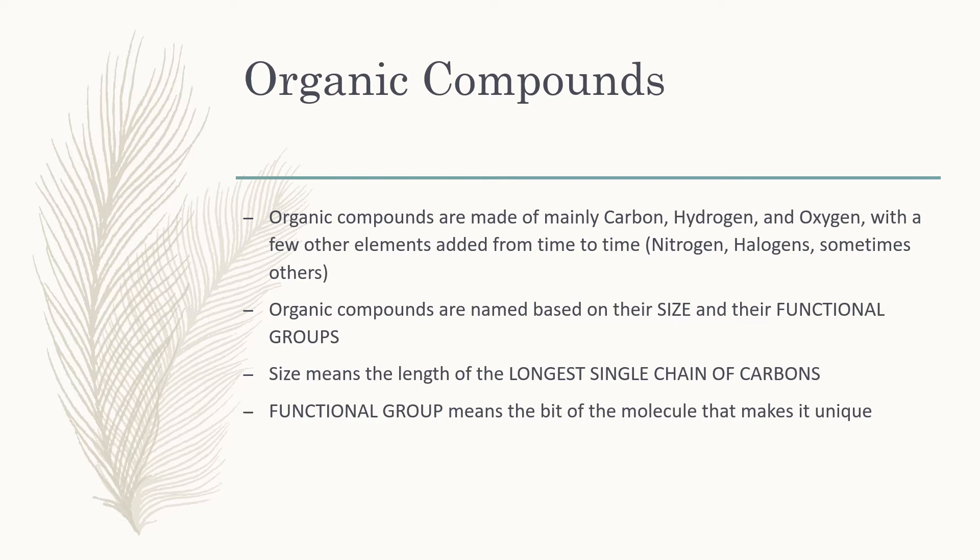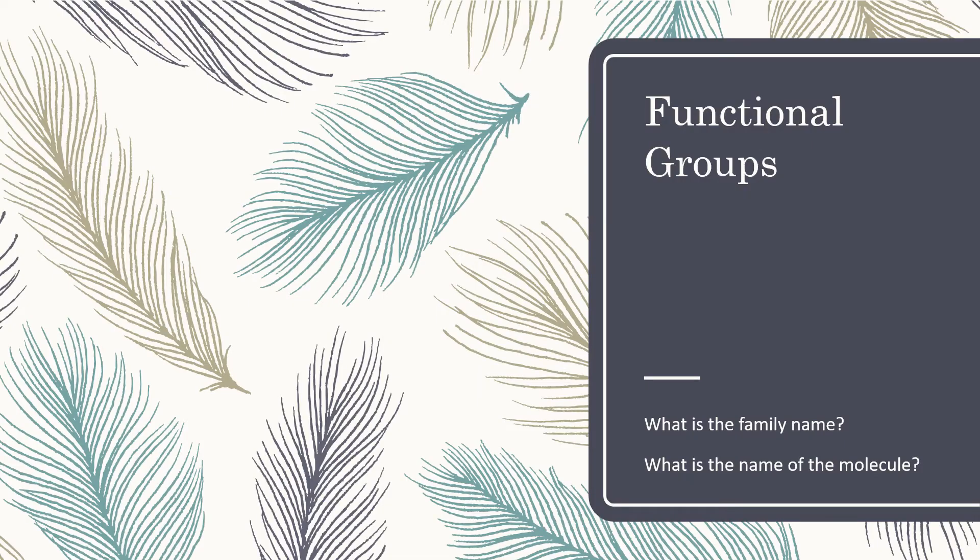We name them based on their size - i.e., how long the longest single chain of carbons is - and their functional groups - i.e., the bits that are not just long chains of carbons. Based on the combination of those two things, we come up with a name for the compound. They come in different families, and each family has different compounds in it.